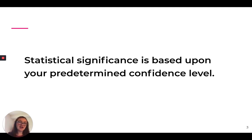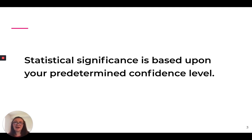If it doesn't meet that 95% confidence level, that result is said to be insignificant. Going back to the coin example: if you get six heads and four tails, heads appears to be the better option based on the test, but those results aren't statistically significant at the 95% confidence level. We can't say we're 95% sure that's what will happen in real life when we roll it out to the broader website.